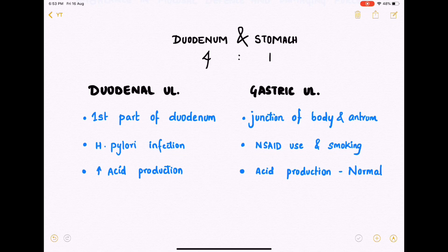In duodenal ulcer, there is increased acid production, which is the main pathology. In gastric ulcer, the acid production is normal, but the pathology lies in a reduced defense mechanism of the mucosa, because of which the mucosa is overly sensitive to the normal amount of acid present.